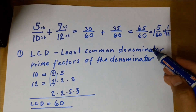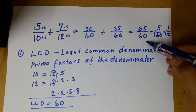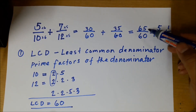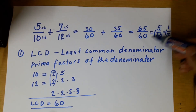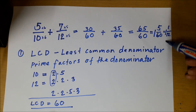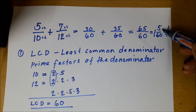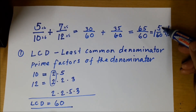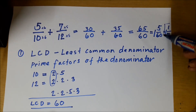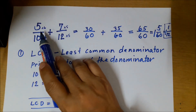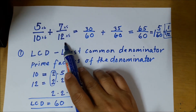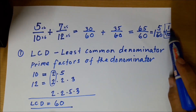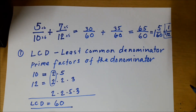We have 65 over 60, which is an improper fraction. We can simplify this by dividing 65 by 60: we get 1 with a remainder of 5, so we write 1 and 5 over 60. Reducing further, we divide both by 5: 5 divided by 5 is 1, and 60 divided by 5 is 12. Therefore, 5 over 10 plus 7 over 12 equals 65 over 60, or in its simplest form, 1 and 1/12.